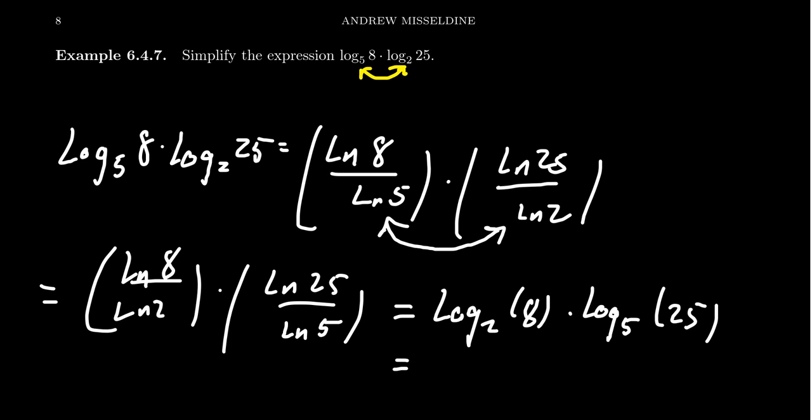Now, of course, what power of 2 gives you 8? That's the third power. And what power of 5 gives you 25? That's the second power. So this product turns out to be 6, something we can see, of course, when we use the change of base formula.